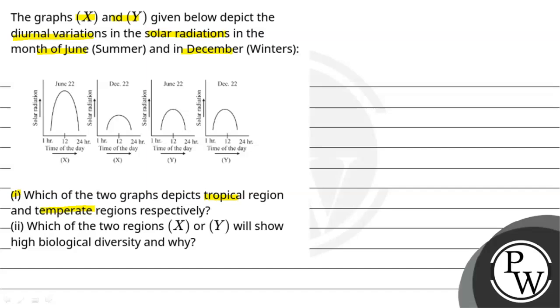In the second part, we have to tell which of these regions will show high biological diversity and why. So let's get into our key concept that will be temperature and tropical region.